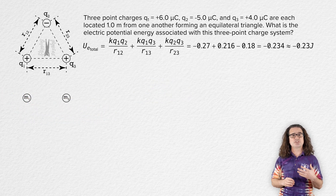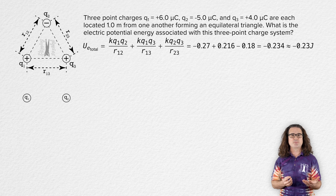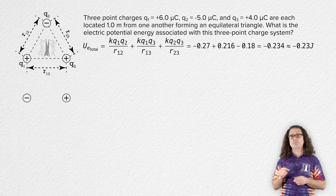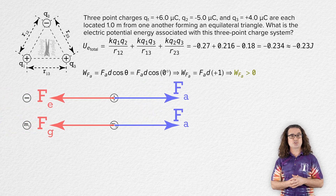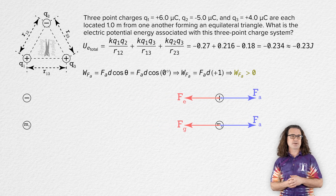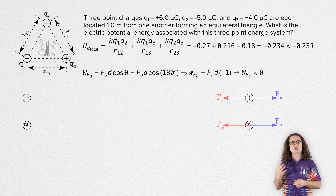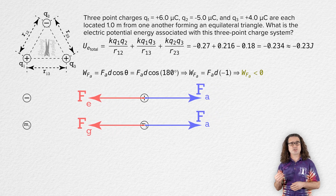The same is true for a system of two point charges, charge one and charge two. However, because two masses are always attracted to one another while two charges may be attracted or repelled, it is helpful to specify the signs of the charges. When charge one and charge two have opposite signs and are attracted to one another, the two-charge system behaves much like the two-mass system. To move charge two farther from charge one, an external force must do positive work, putting electric potential energy into the two-charge system. To move charge two closer to charge one, an external force must do negative work, removing electric potential energy from the two-charge system.